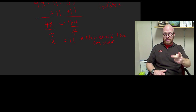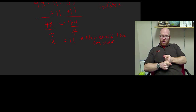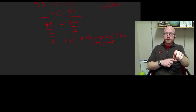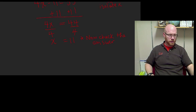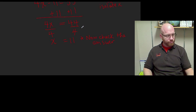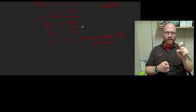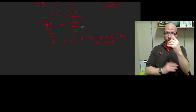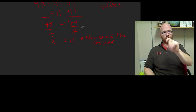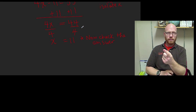So now we have an answer. x equals 11. I believe I'm right, but how can we know? What we do is check our answers to make sure we haven't made any mistakes. We have to check to see if x equals 11, and when it's replaced in the original equation, do we get 33 equals 33?